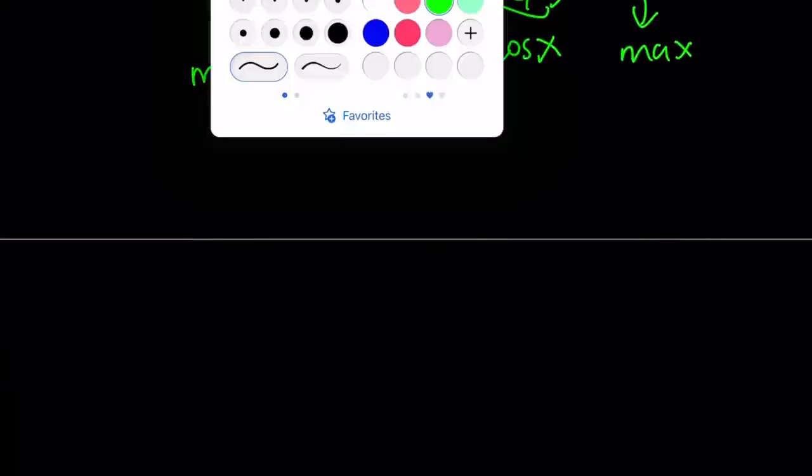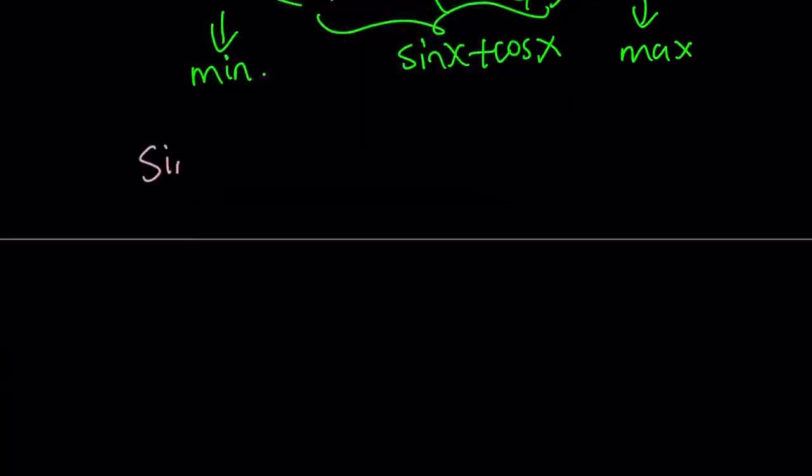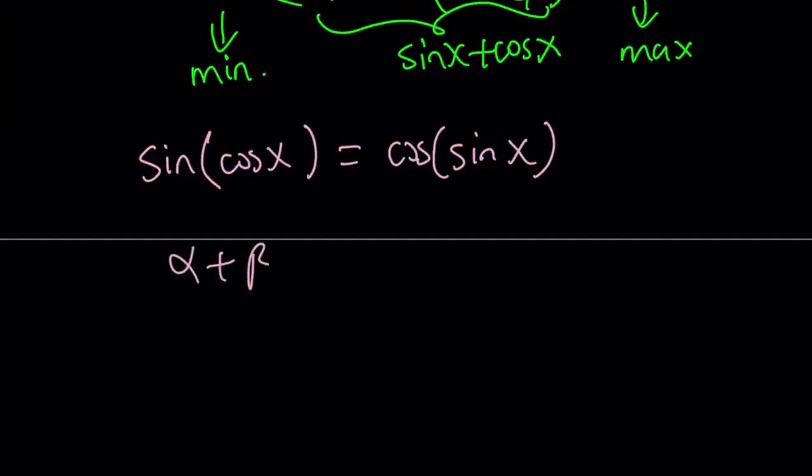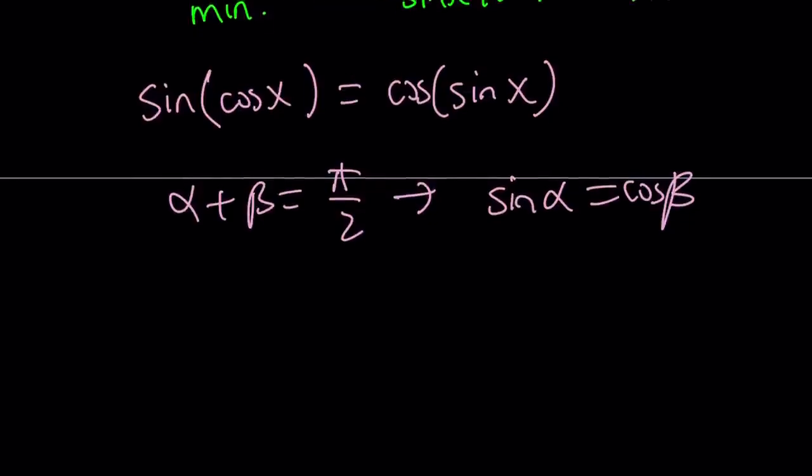Once we establish that, we can talk about the solution method here. Let me rewrite the equation. Sine of cosine x equals cosine of sine x. To be able to solve this equation, I'm going to use a well-known fact in trigonometry. If two angles are complementary, such as alpha and beta, if alpha plus beta is pi over 2, then you can basically say that sine of alpha is the same as cosine of beta or vice versa. This is a really nice, neat identity. So, if you subtract an angle from pi over 2, the sine turns into cosine and cosine turns into sine. So, this allows us to convert one to another easily.